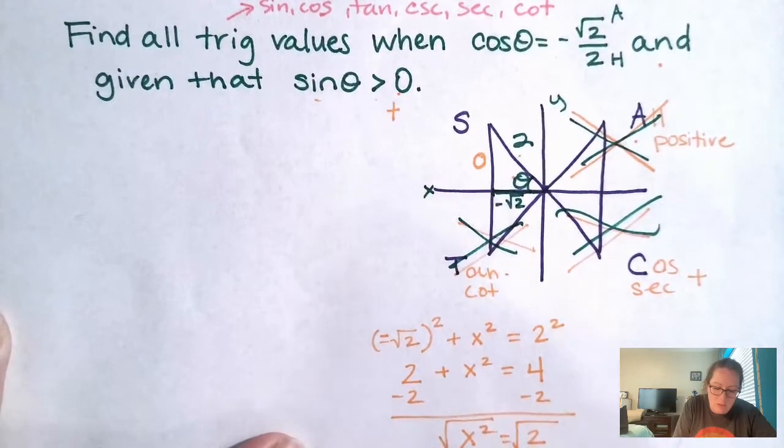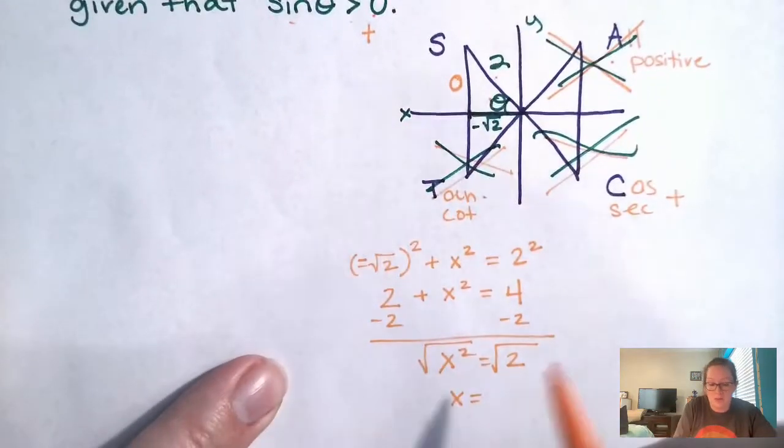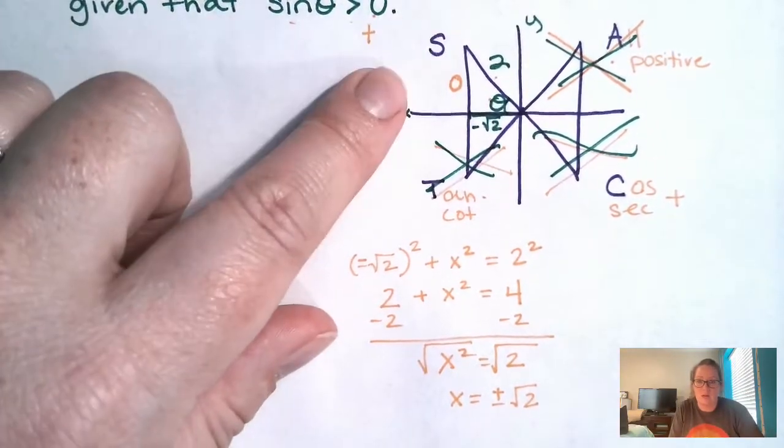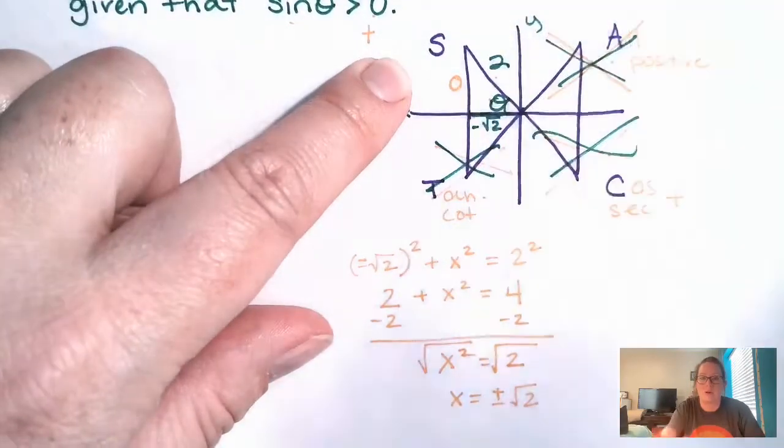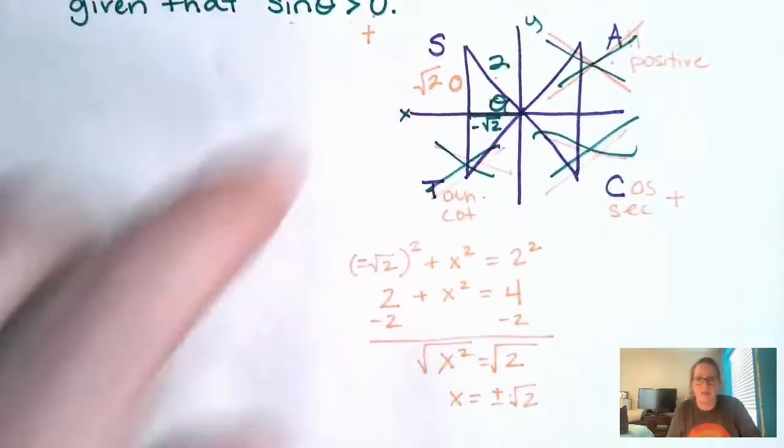Square root, square root, X equals. Technically, we put the square root in there. So the answer could be plus or minus square root. But which one makes a sense for this triangle? Positive O is because it's going up. So it's going to be really the positive square root of two. Okay.